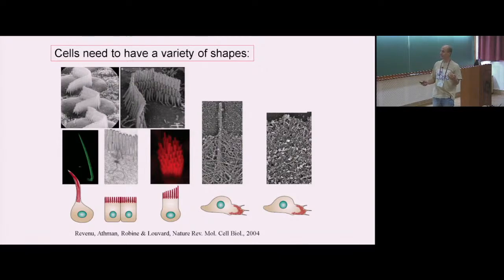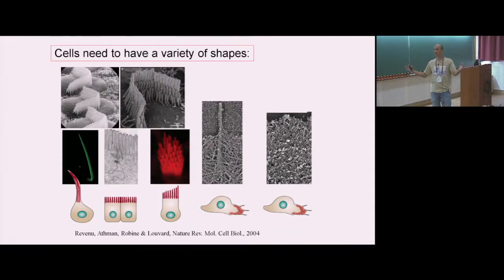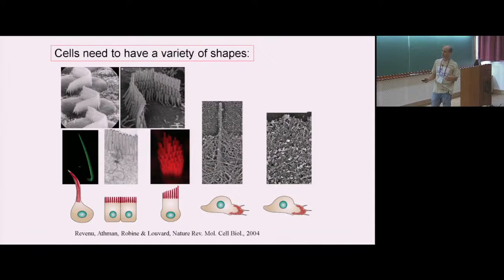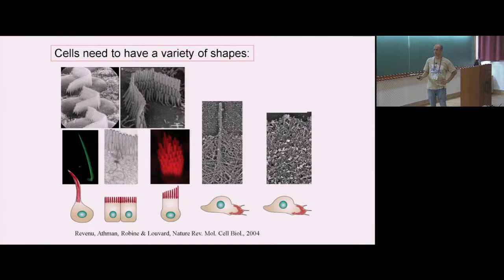Going back a step, we talked about how a full-fledged protrusion is built, but how does the cell actually initiate it? How does the cell break the uniformity of the membrane and decide that here there will be a protrusion and here there will not? The front of the entire cell can also be thought of as a protrusion — why does the cell produce such a protrusion only in one place and not along the entire perimeter? What determines these patterns?